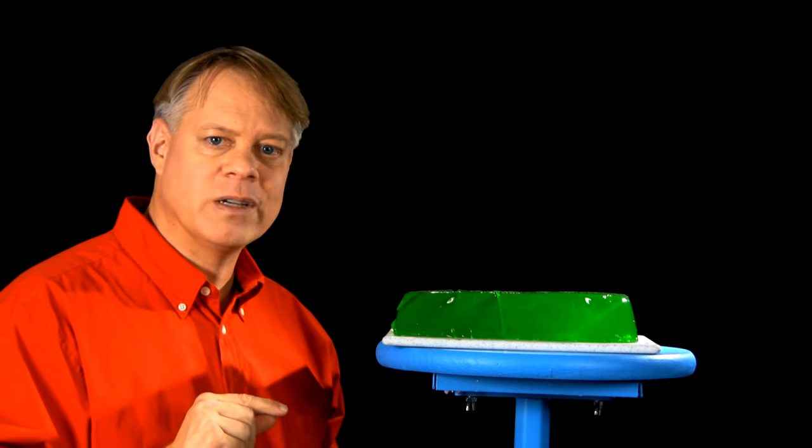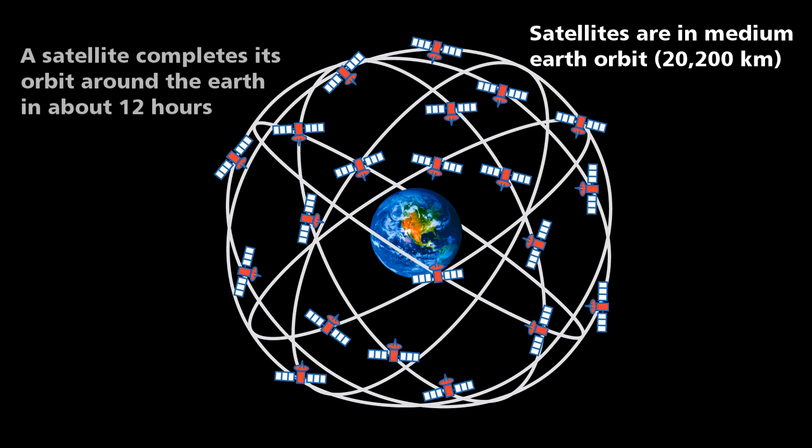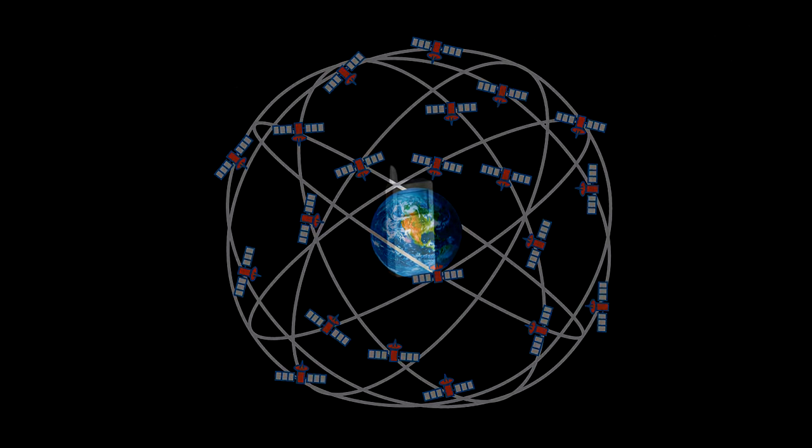Our world runs off such accuracy. For example, the Global Positioning System, GPS, requires it. The Global Positioning System consists of 24 satellites orbiting the Earth.